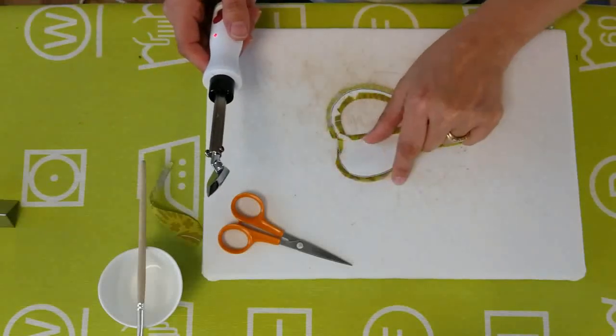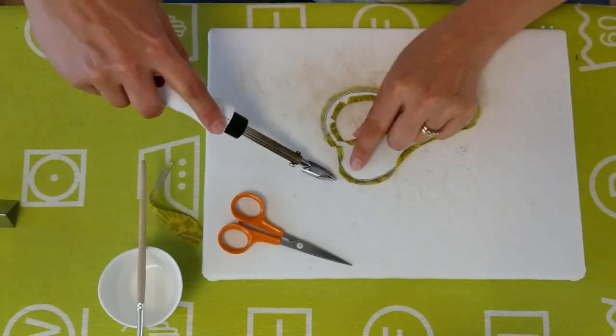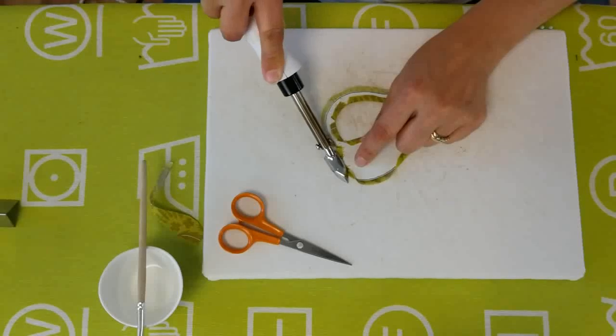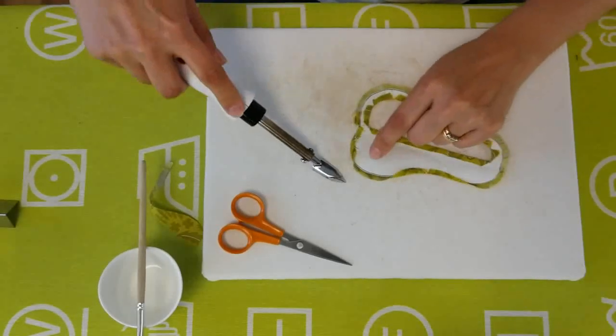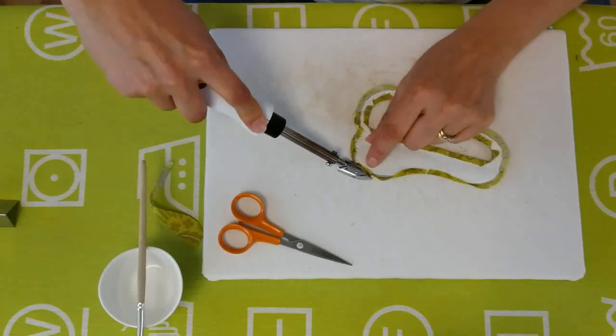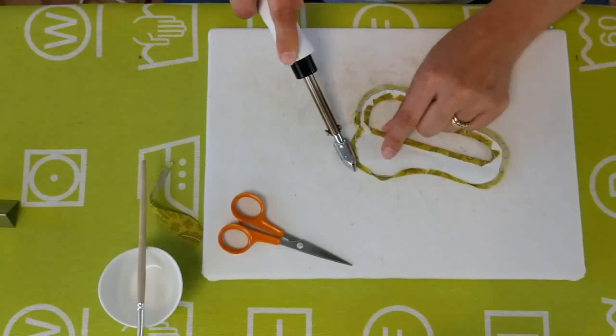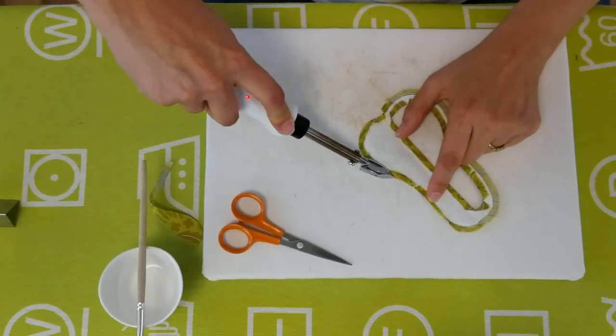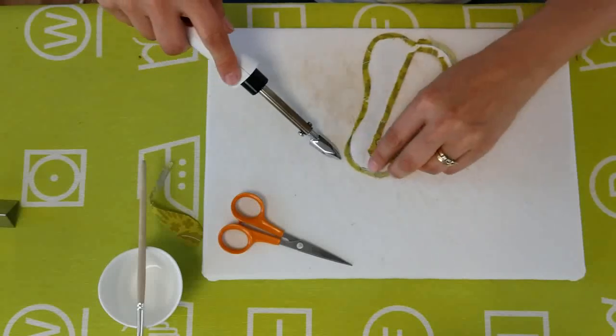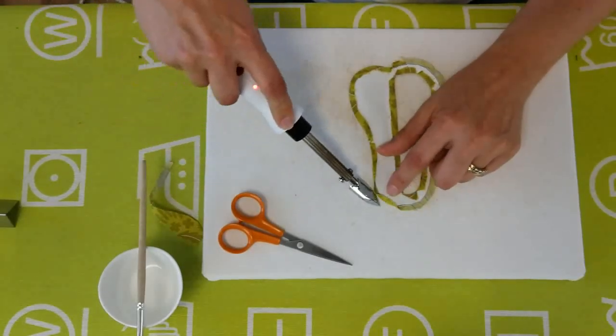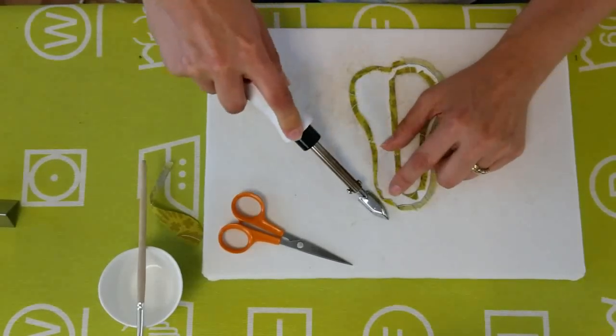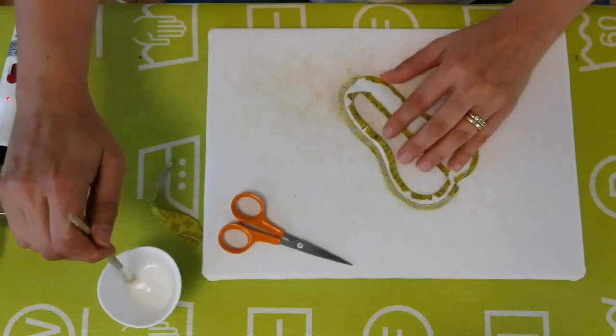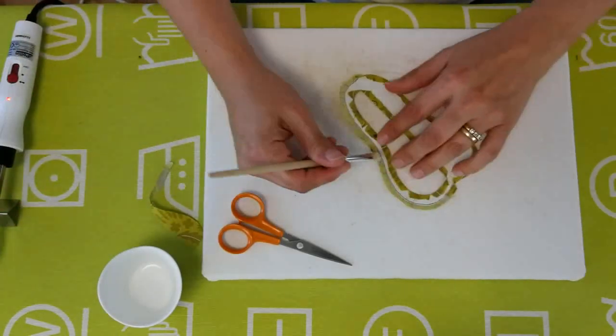Again, the same thing here where you go in front of it and pull and ease the fabric back around. Now I want to do the same thing to the top of the pear, and then turn around and do the other side.